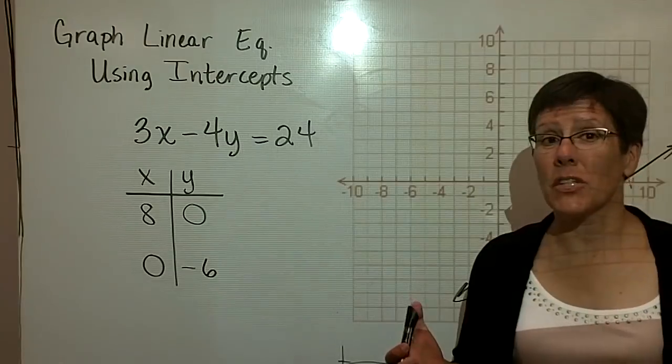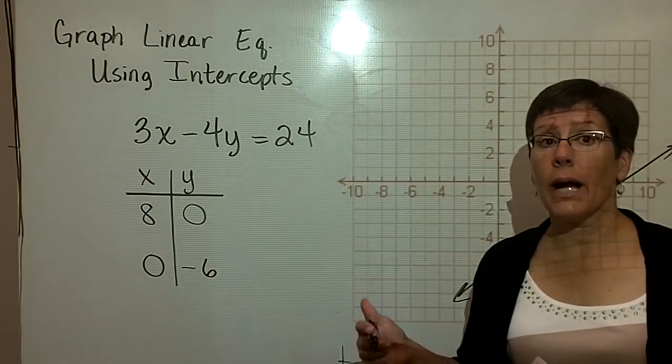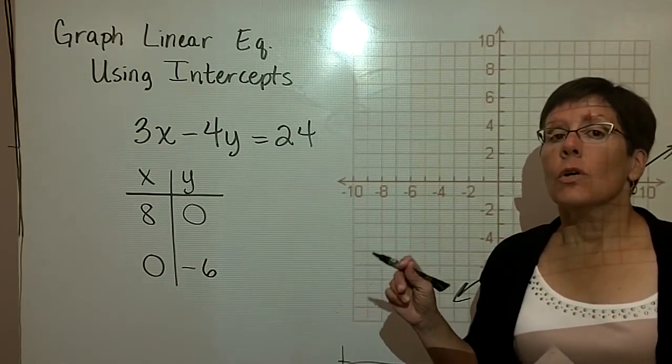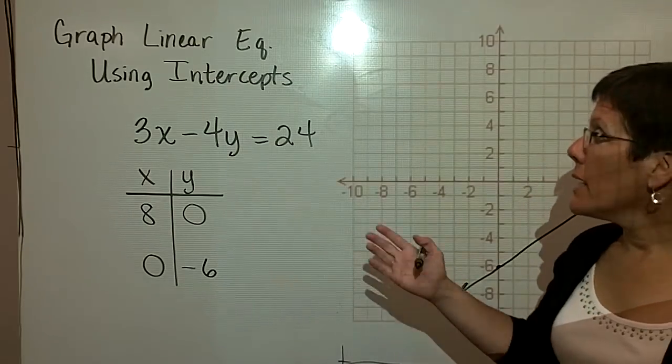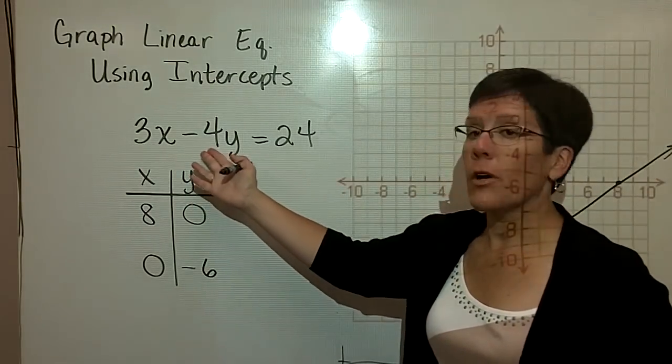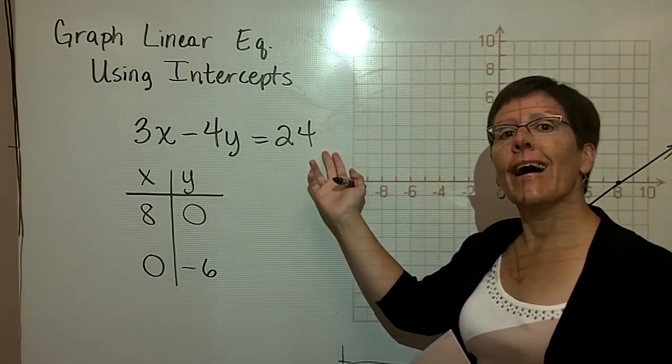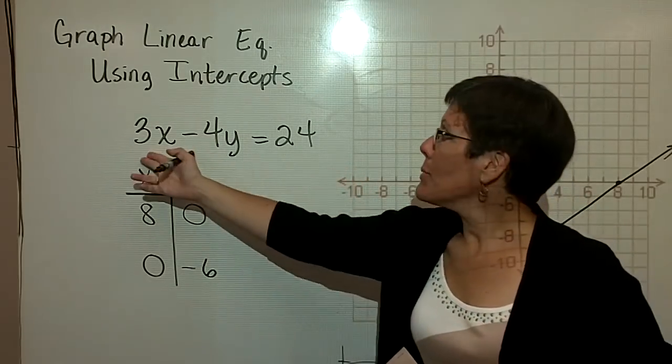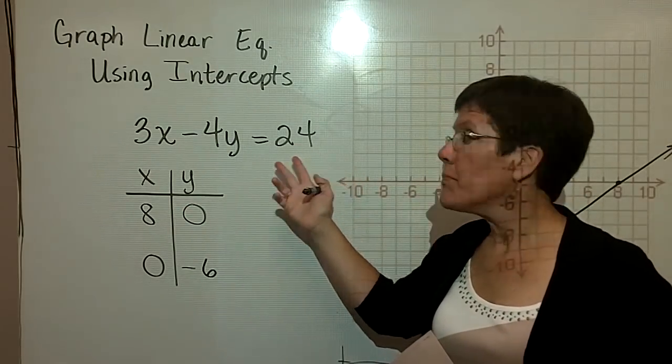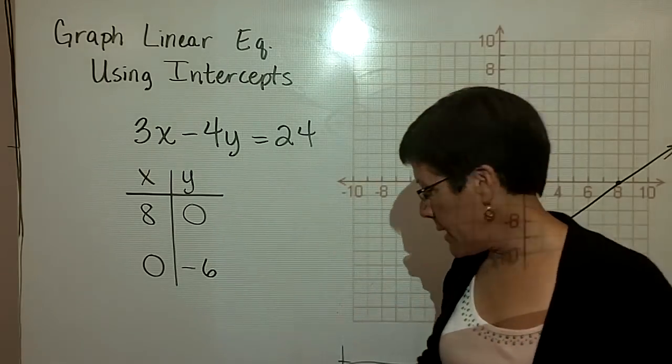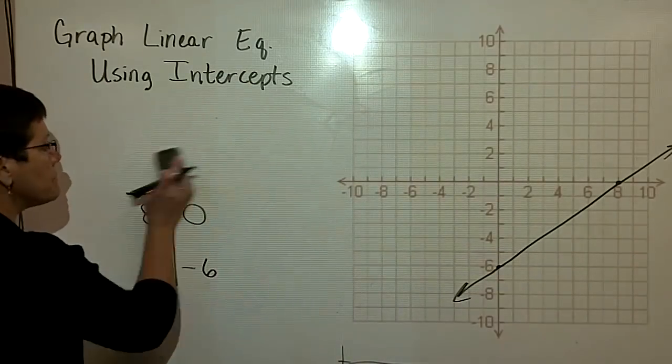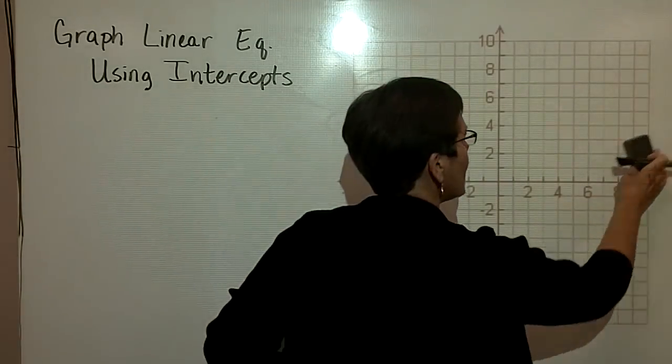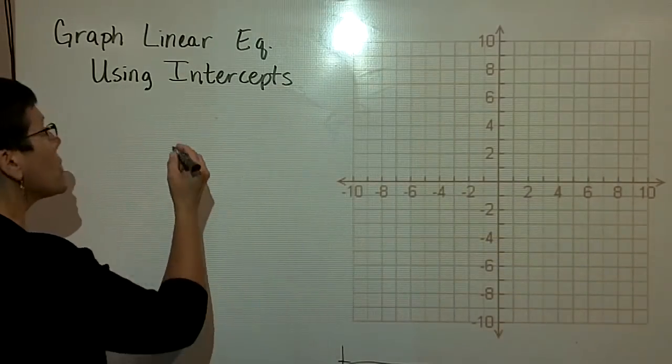It's pretty nice putting zeros in for x and for y. So it lends itself. When it becomes a problem is when the coefficients in front of x and y do not divide evenly into the constant. 3 divides into 24 evenly. 4 divides into 24 evenly. But let's look at this next problem. And this is when I may not use the intercept method personally.